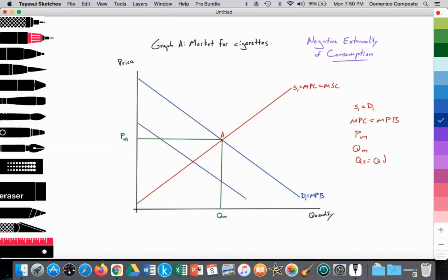So society ideally would like less consumption. That's going to be reflected by D2. D2 equal to the marginal social benefit. So since society would like less consumption of cigarettes, we notice that at QM, the marginal social cost of the consumption of cigarettes is greater than the marginal social benefit. Which we can see here.